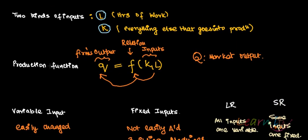The production function describes the relation between output Q and the inputs K (capital) and L (labor). These inputs feed into the production process and generate the firm's output. Small q is the firm's output, and capital Q is the market output.